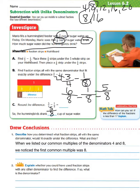Now let's look at our hot problem: Could you have used fraction strips with any other denominator to find the difference? Yes, we could have used a different denominator because we see there's another common denominator for these two, which is 16. So technically we could have used the denominator of 16 for both fractions.